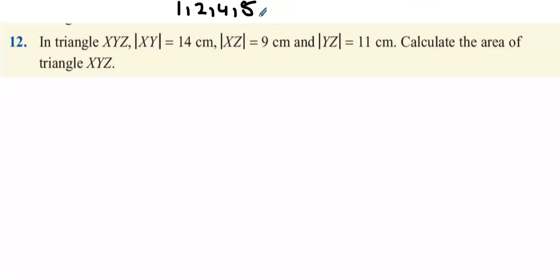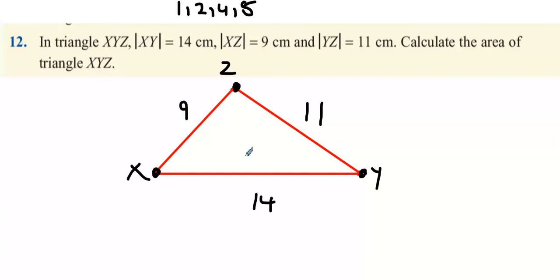So that's 1, 2, 4, 5 done. Now we're on to question 12. Now question 12 is a different type of question where they give us three lengths. So x is the longest length, y to z is another length of 11, and then x to z is 9. So we have here x to y, call that x, call this y, that's 14, y to z is 11, and finally x to z is 9.